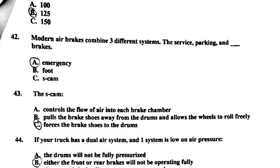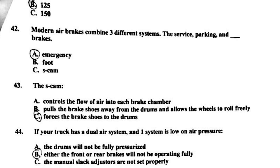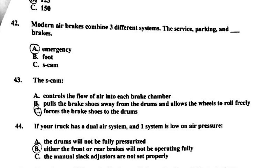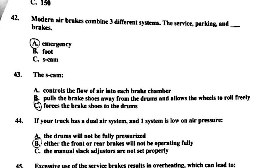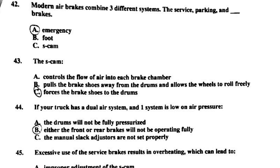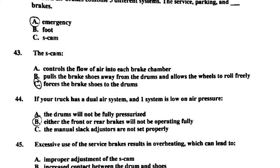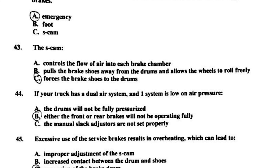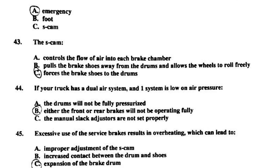Number forty-two: modern air brakes combine three different systems — A, the service, parking, and emergency brakes. Number forty-three: the S-cam — C, forces the brake shoes to the drums. Number forty-four: if your truck has a dual air system and one system is low on air pressure — B, either the front or rear brakes will not be operating fully.